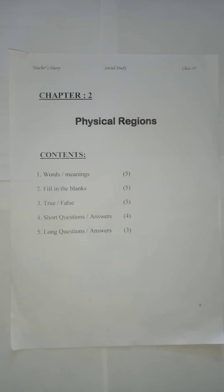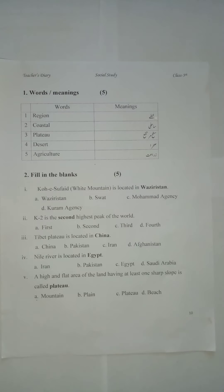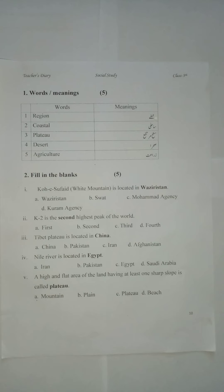You have to write all work in your neat copies. Chapter 2, Physical Regions. Contents: 1 - Words Meanings 5, Fill in the Blanks 5, True/False 5, Short Question Answers 4, Long Question Answers 3. Now students, on your next page write Words Meanings. Draw a line in the center of the page. Number 1: Region - Khitte, Coastal - Saheli, Plateau - Satamurtafa, Desert - Sahra, Agriculture - Zarath. Draw a finishing line.